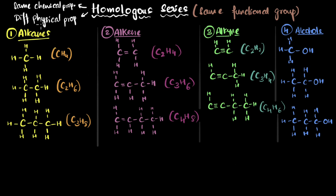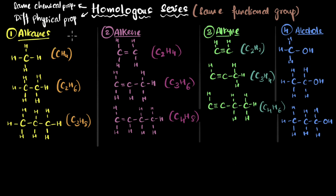Of course, they have different physical properties. For example, they have different masses because they have different numbers of atoms — in fact, the mass keeps increasing. Similarly, the melting and boiling points also keep increasing as you go down. So because they have the same functional group they have the same chemical properties, but because they have a different number of atoms and different number of bonds, they will have different physical properties.